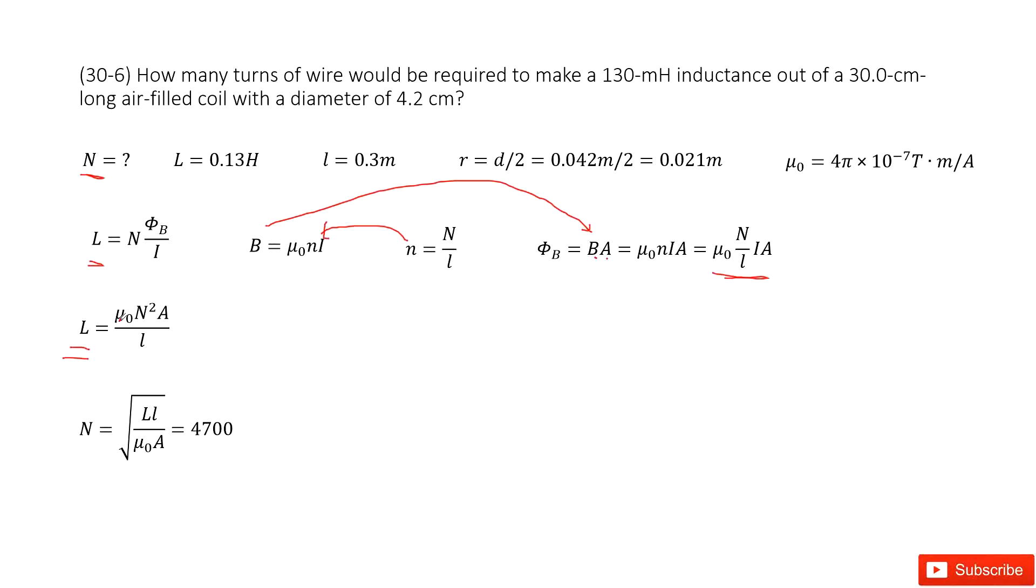L is given, mu naught is a constant we list there. And A is pi r squared, because r radius is given, L is given. So very easy.